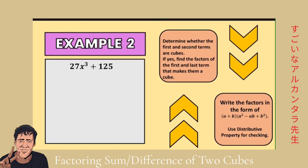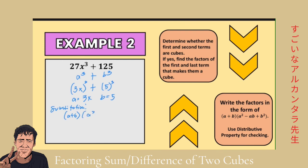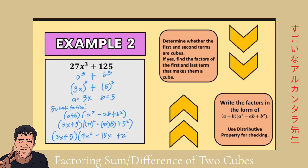Next example: 27x cubed plus 125. We follow the pattern a cubed plus b cubed. Our a is 3x (since (3x)³ = 27x³) and our b is 5 (since 5³ = 125). By substitution using the sum of two cubes pattern: (3x plus 5)(9x squared minus 15x plus 25). That is your answer.